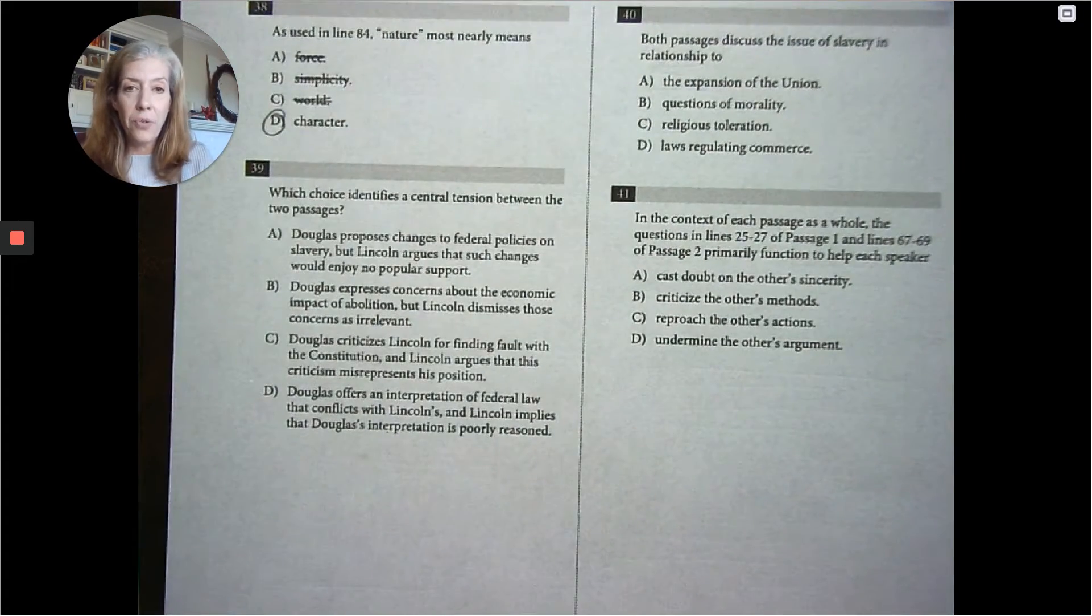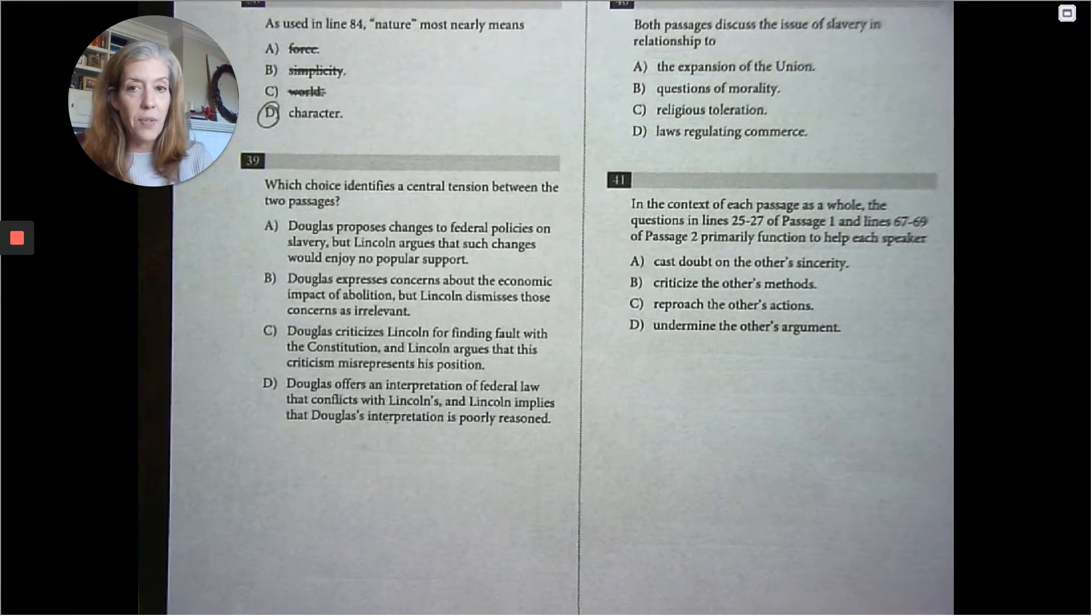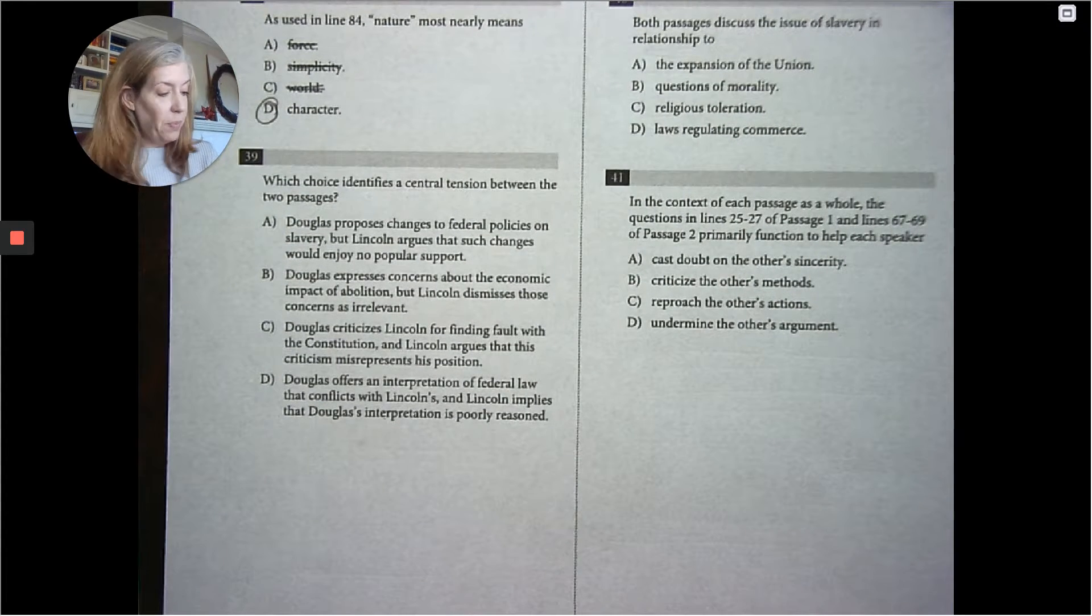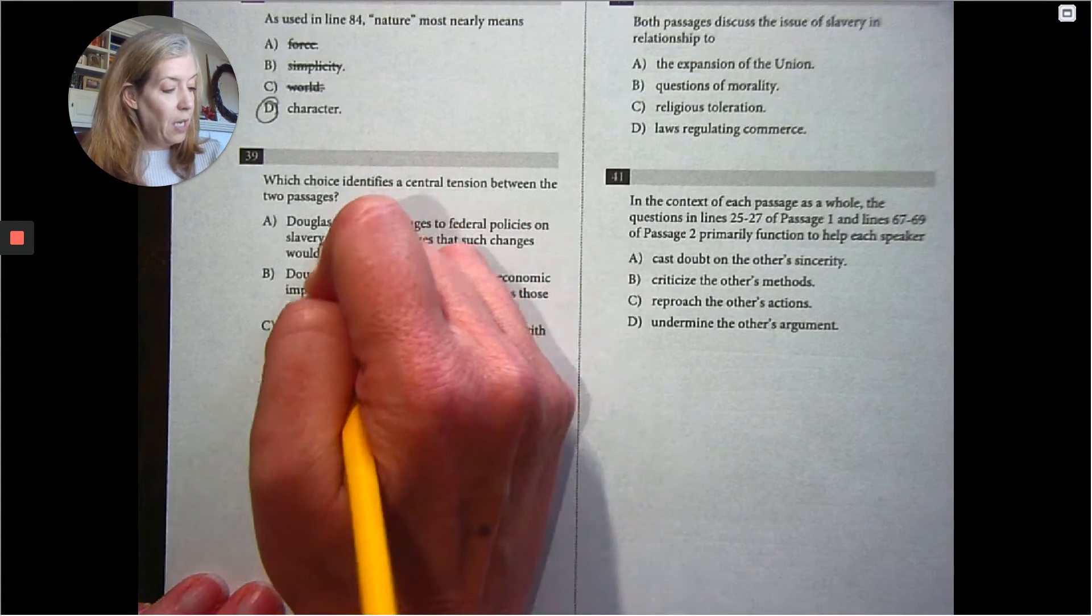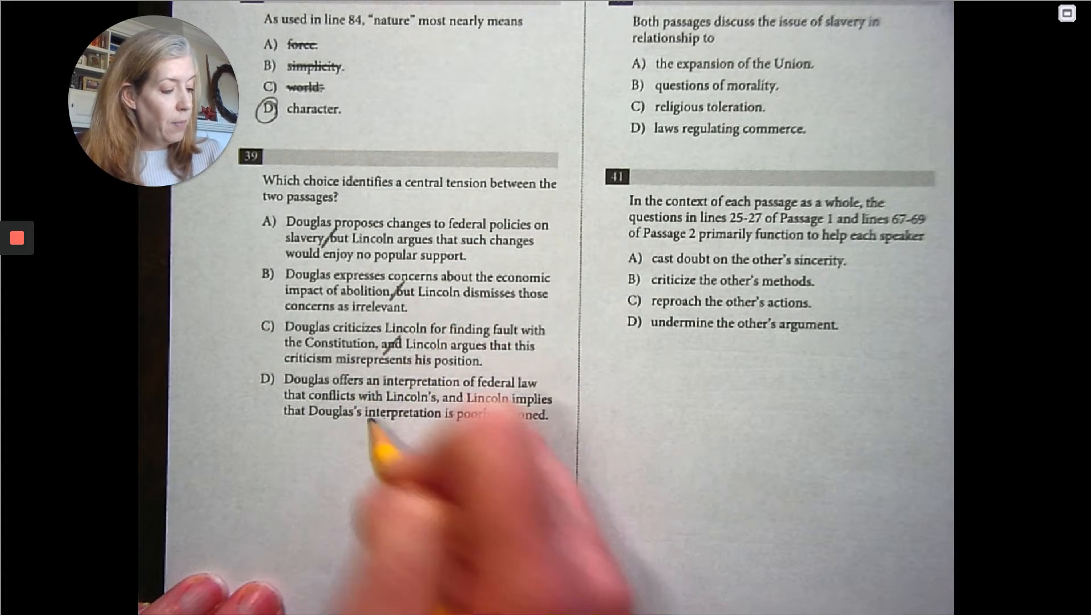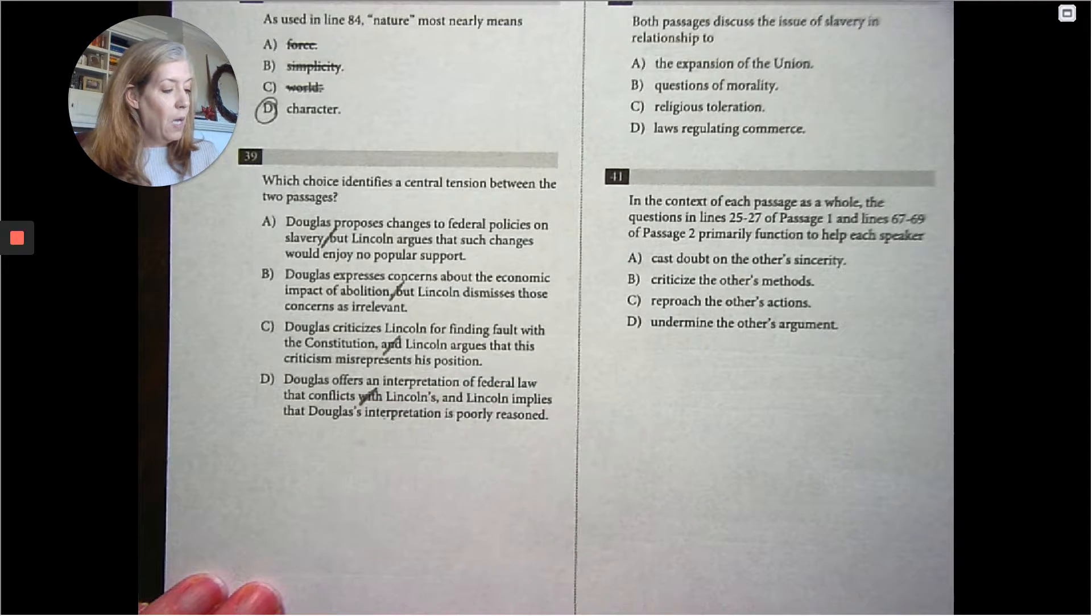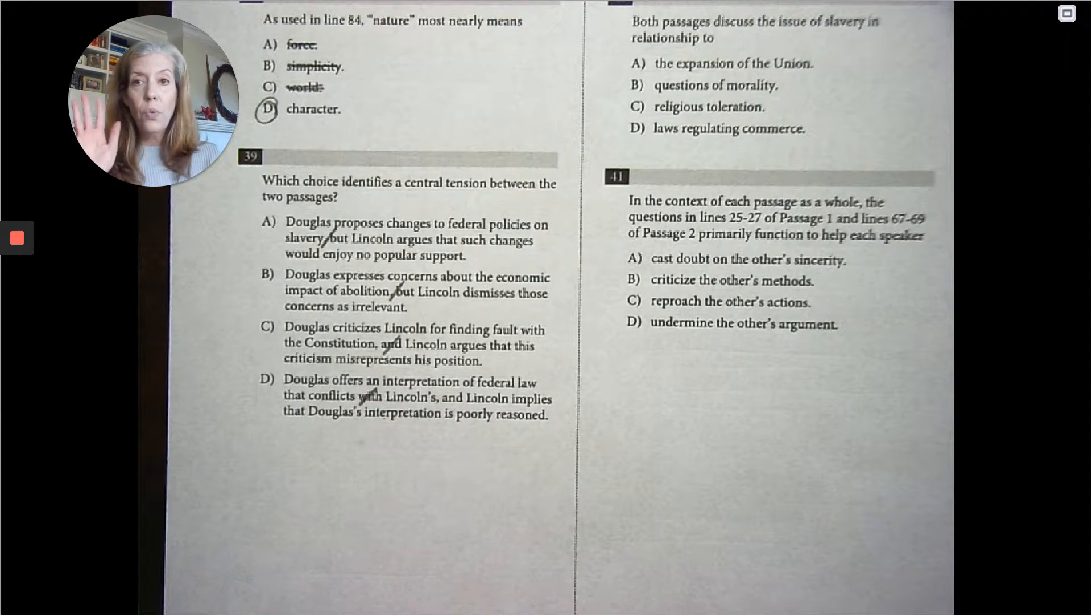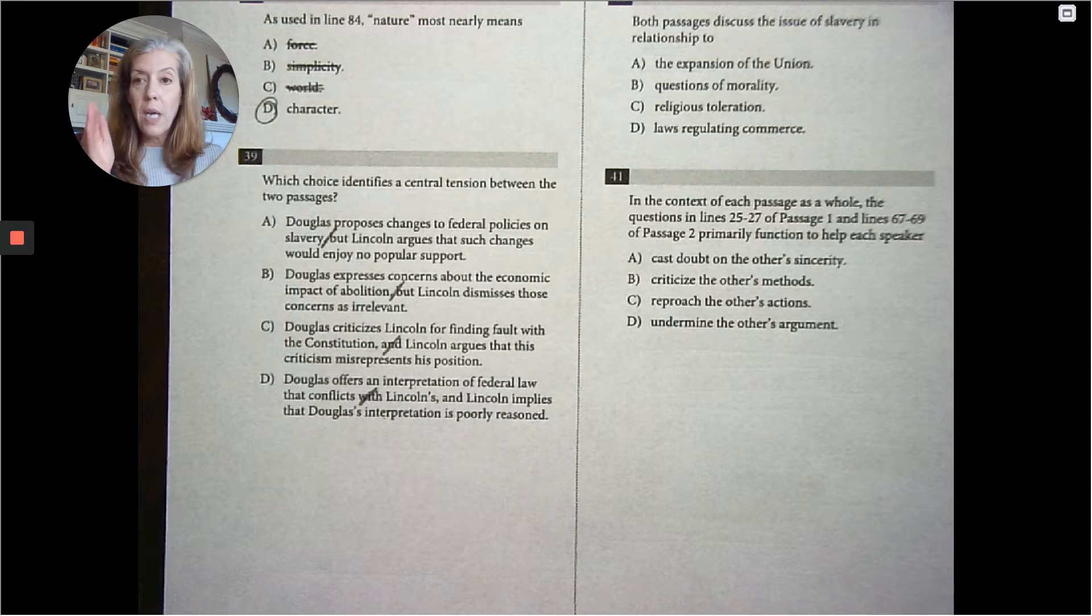Which choice identifies a central tension between the two passages? I've showed you this before. I really like this. I hope you do this automatically. When you decide, do you really, really know Douglas's theme?